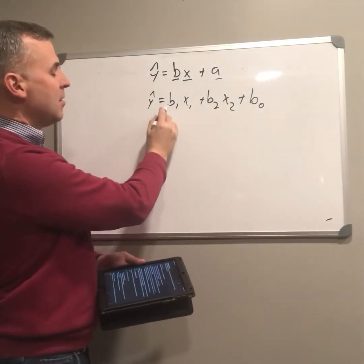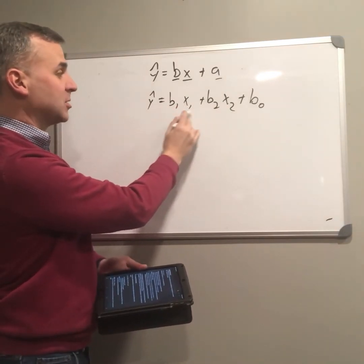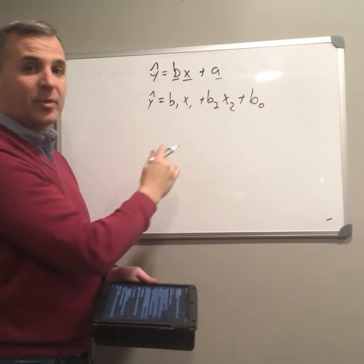And so our multiple regression equation, b sub 0 is the y-intercept, b sub 1 is the coefficient for the first predictor, b sub 2 is the coefficient for the second predictor.